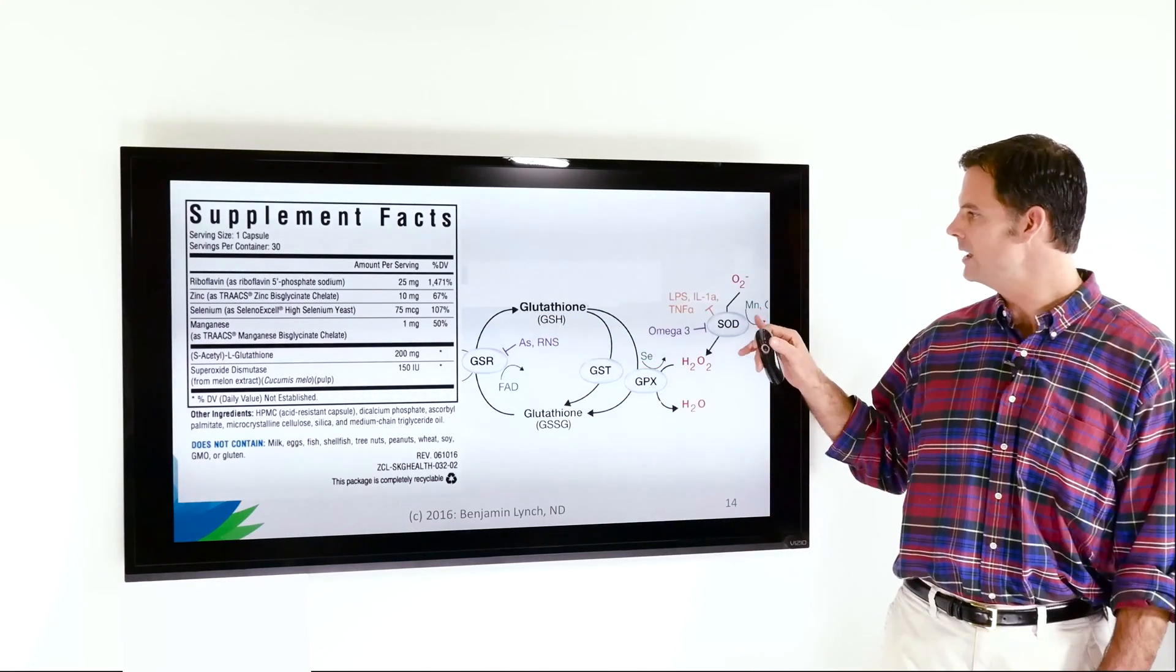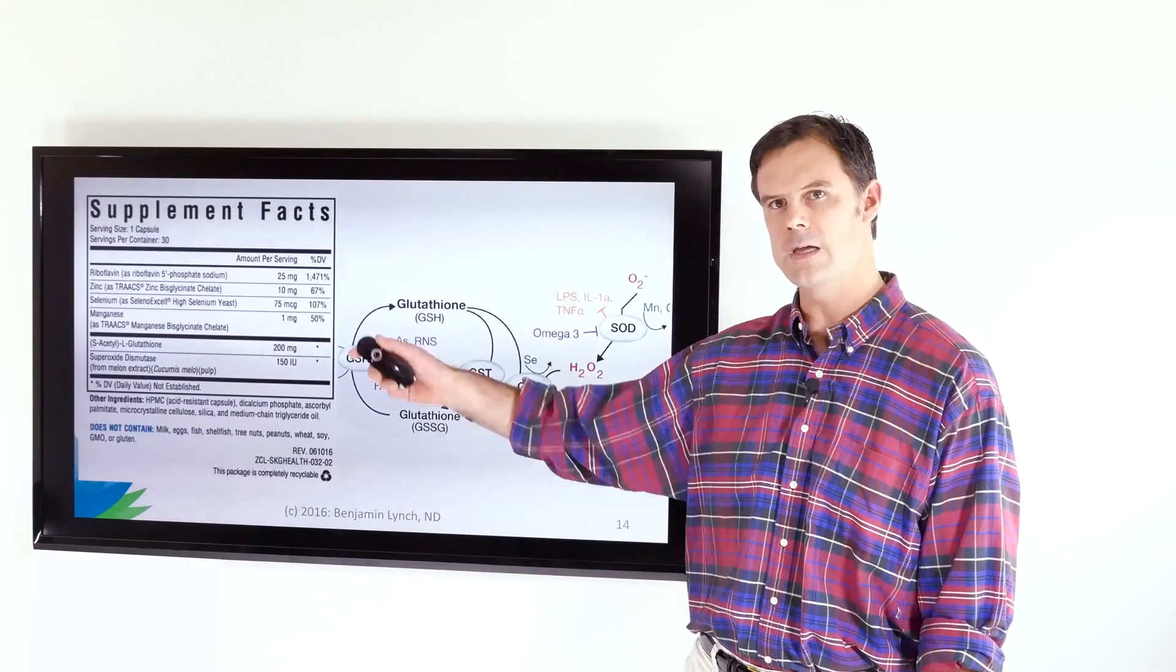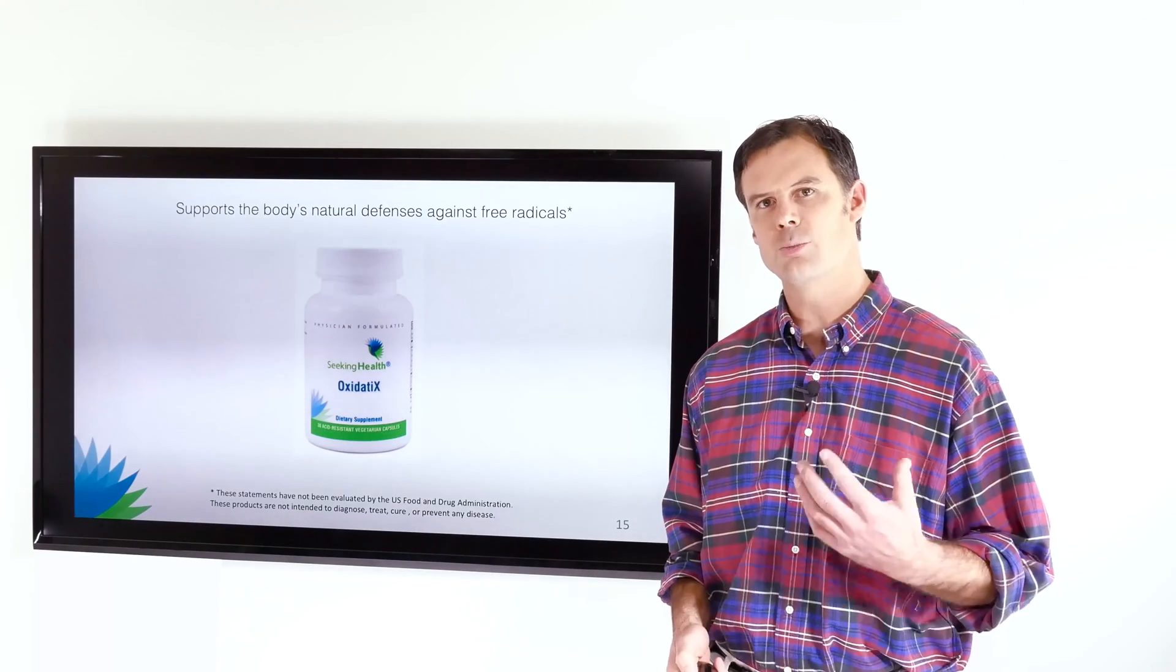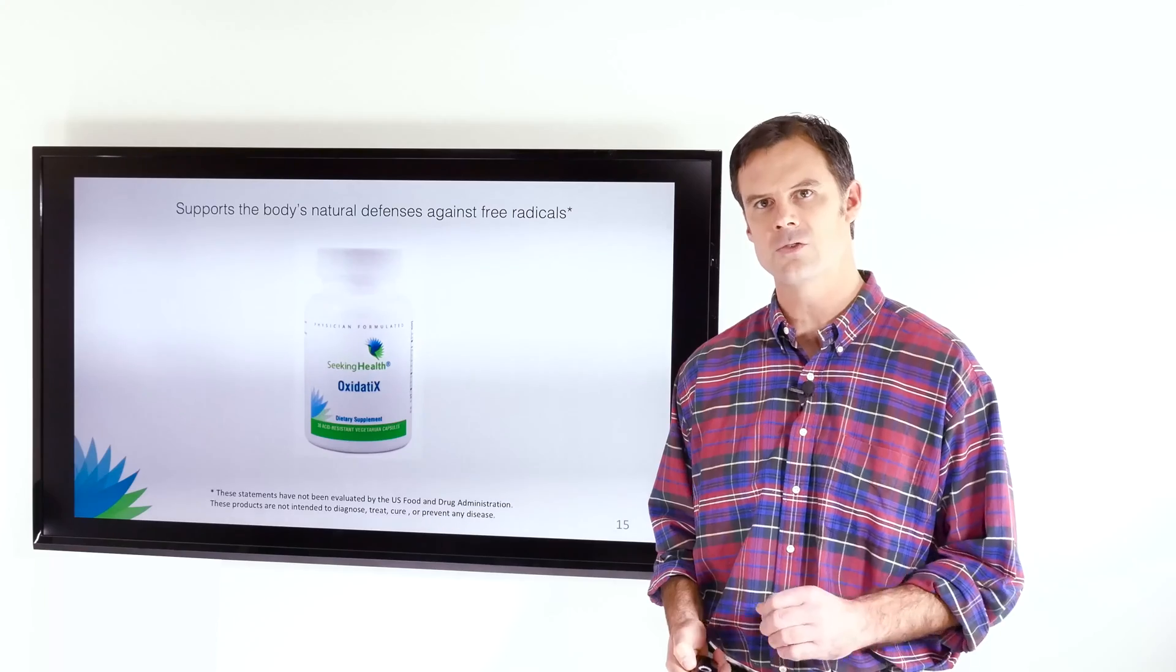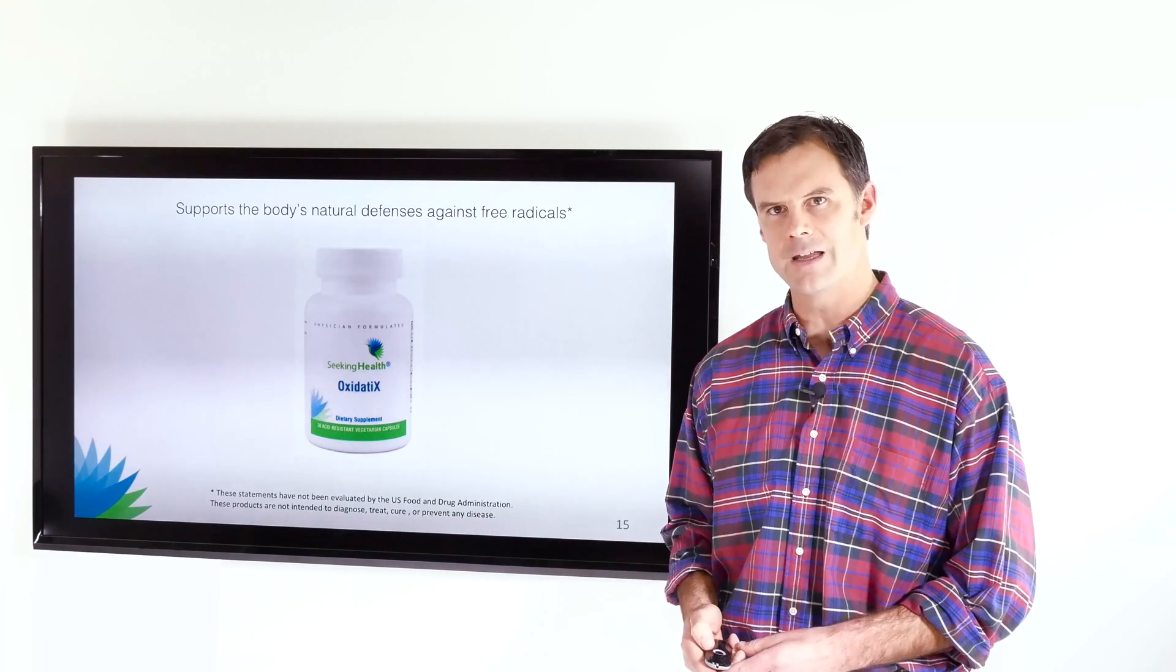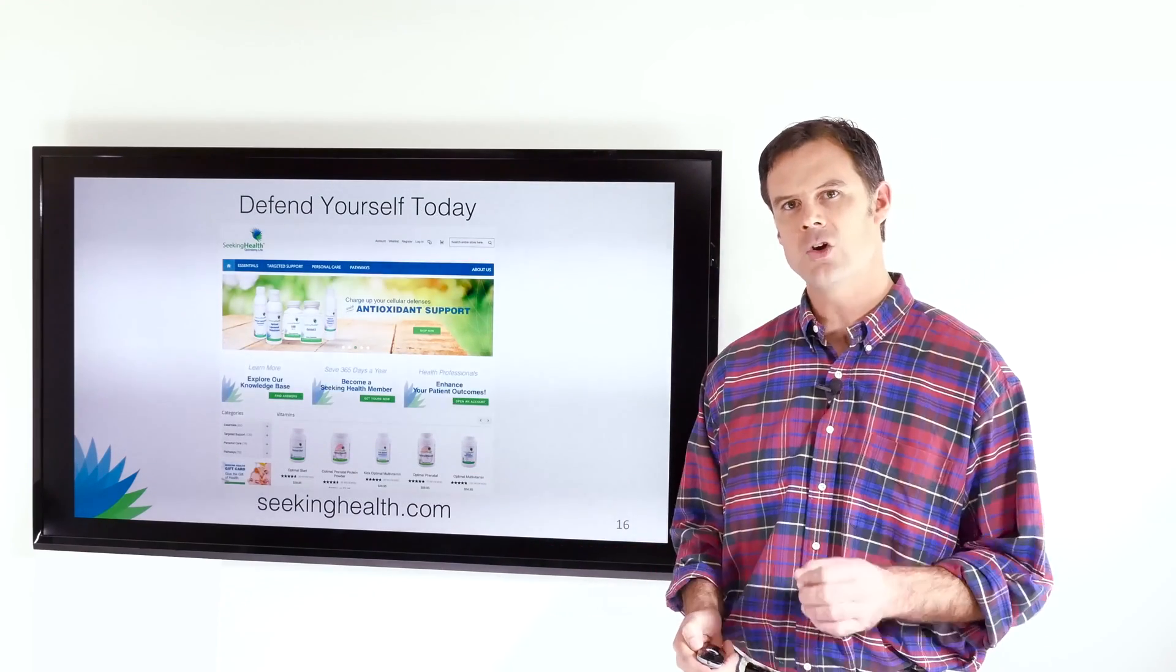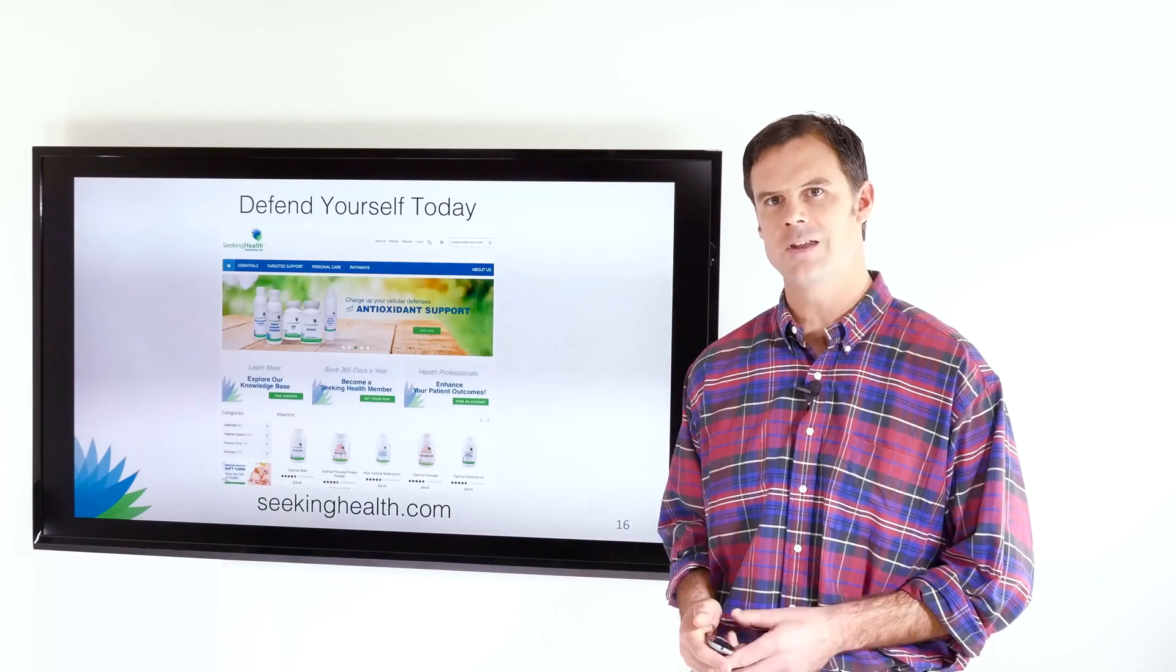You've got the manganese, selenium, riboflavin, glutathione, and superoxide right here. And this product is called Oxidatix and it's designed to protect and support your body's natural defenses against oxidative stress. That's what it does and that's why it's called Oxidatix. And you can find this at SeekingHealth.com and I encourage you to defend yourself and your family today by using Oxidatix. Thank you.